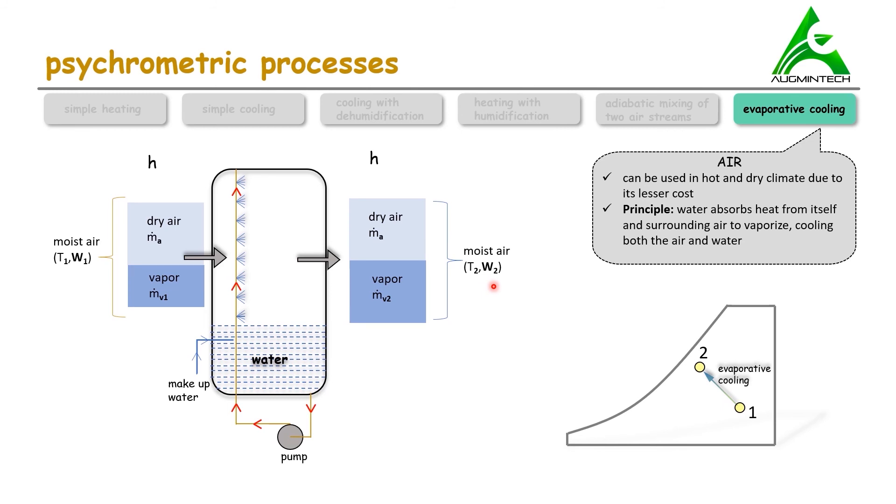Note that in this entire process, the enthalpy remains the same because there is no heating or cooling from any cooling or heating coil. Also, the wet bulb temperature remains the same. So this is the process of evaporative cooling.